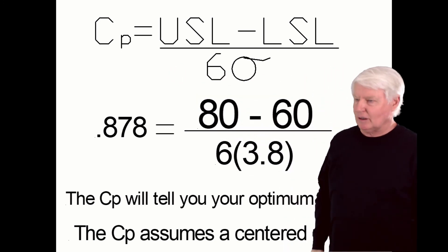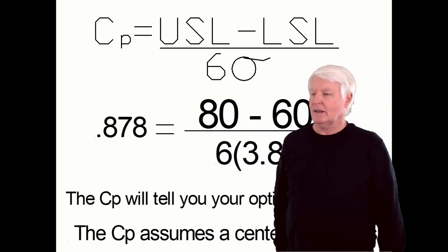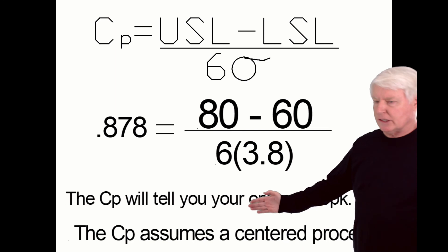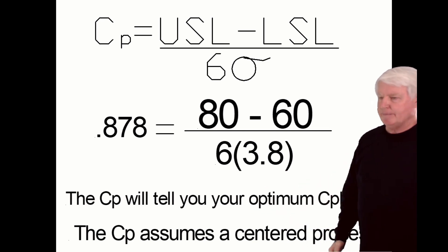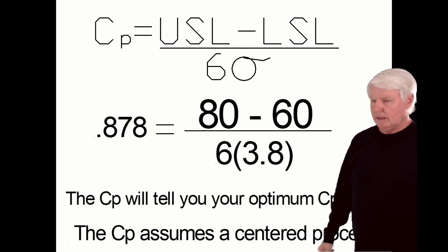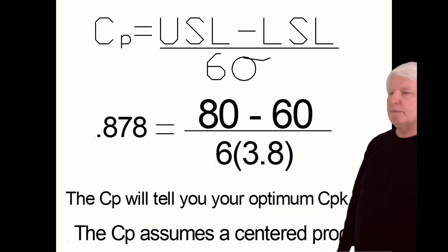I know mathematically that doesn't look like it's the average, but it is. They'll always equal one another. The CP will tell you your optimum CPK if the process is centered. The CP assumes a centered process.